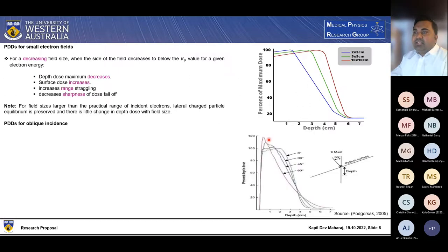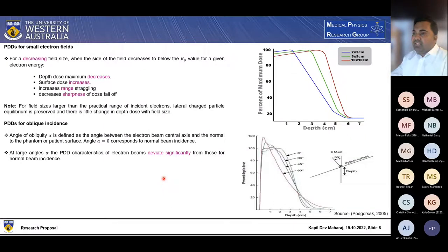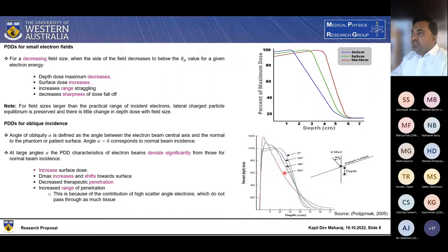Percentage depth dose for oblique incidence. So in terms of the oblique or gantry angle, angle of oblique alpha is defined as the angle between the electron beam central axis and the normal of the phantom or patient surface. So as you can see, this angle is known as alpha and when alpha is equal to zero, which corresponds to the normal beam incidence. At large angles alpha, the percentage depth dose characteristics of electron beam deviate significantly from those from the normal beam incidence, such as increase the surface dose. As you can see from this figure, D max increases and shifts toward the surface, decreased therapeutic penetration, increased range of penetration. This is because of the contribution of high scattered angle electrons, which do not pass through as much tissue. So oblique effect becomes significant for angle of incidence alpha exceeding 45 degrees as we can see from this figure.